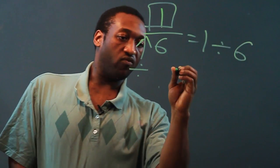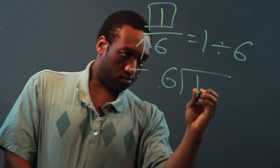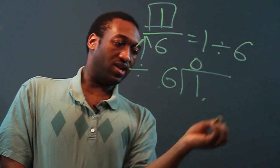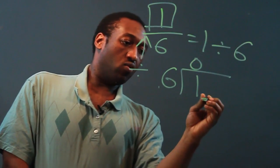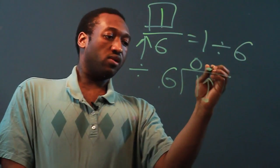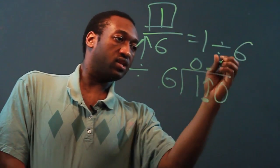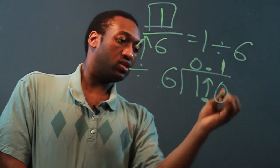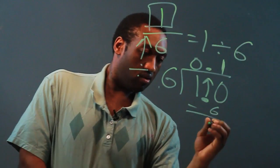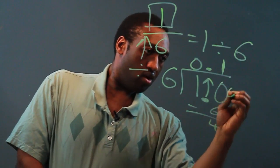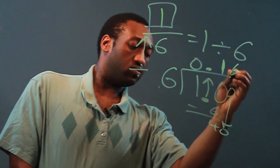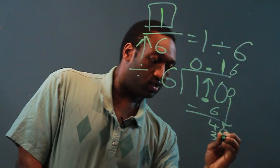Now let's perform the long division. Six into one does not go, that's zero. We'll add a decimal and bring it up. Add a zero, six into ten goes once. Minus six, four. Add another zero, six into forty is six, which is thirty-six.